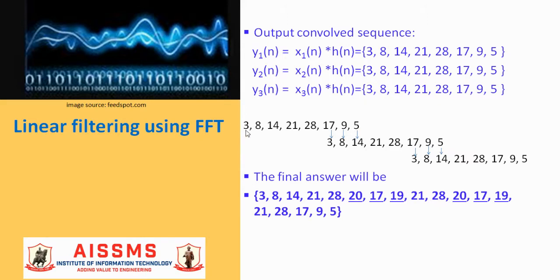So the final answer will be writing these non-overlapped sequences as it is and then adding the overlap samples. So 17 plus 3 gives 20, 9 plus 8 gives 17, 5 plus 14 gives 19, and the remaining samples as it is. Here, as we are overlapping and then adding, the name of the algorithm is overlap and add algorithm.